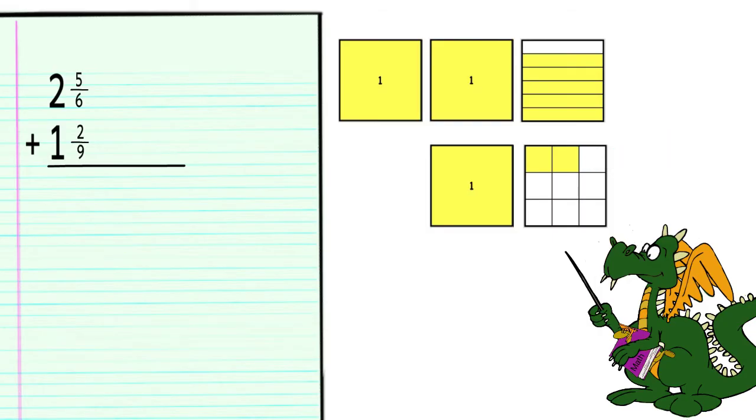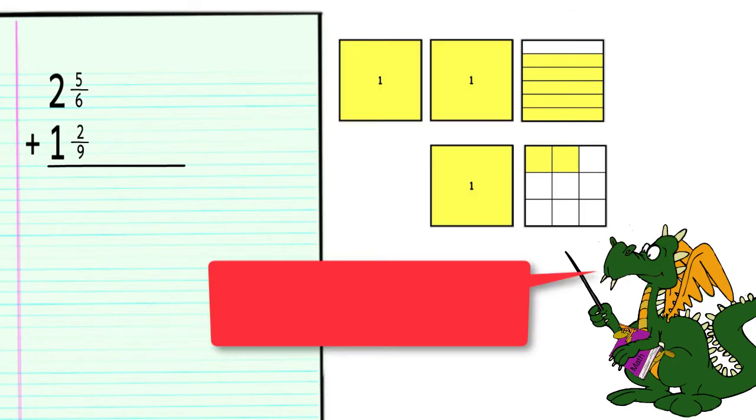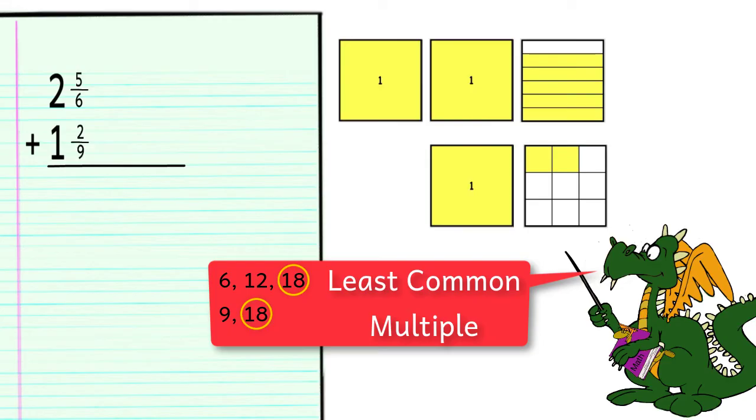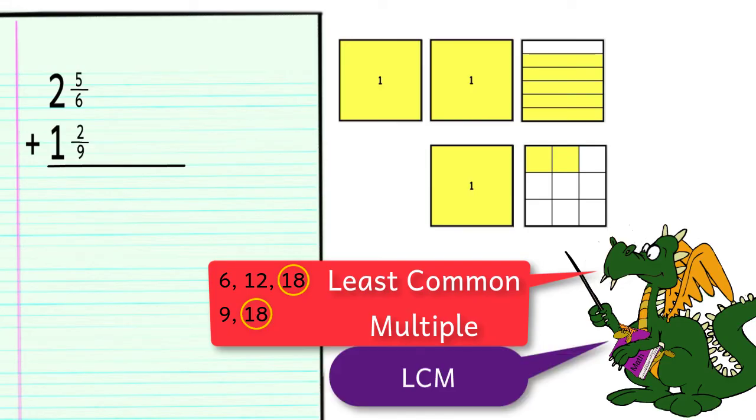So, we are going to need to find a number that both denominators can divide into. We can do this by listing the multiples of 6 and 9. We will start by writing the multiples of 6: 6, 12, 18. We can stop the list here, since 18 is also a multiple of 9. In this case, 18 is the least or smallest common multiple. This is often referred to as the LCM.